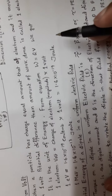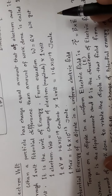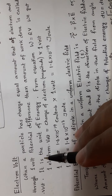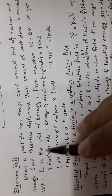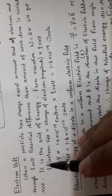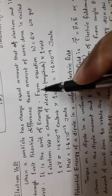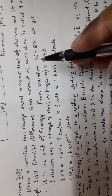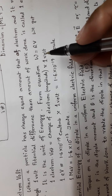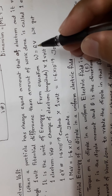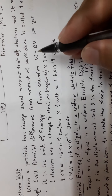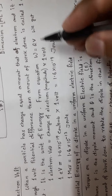One electron volt is the unit of energy, used as a non-SI unit. The work formula is W equal to q into V.